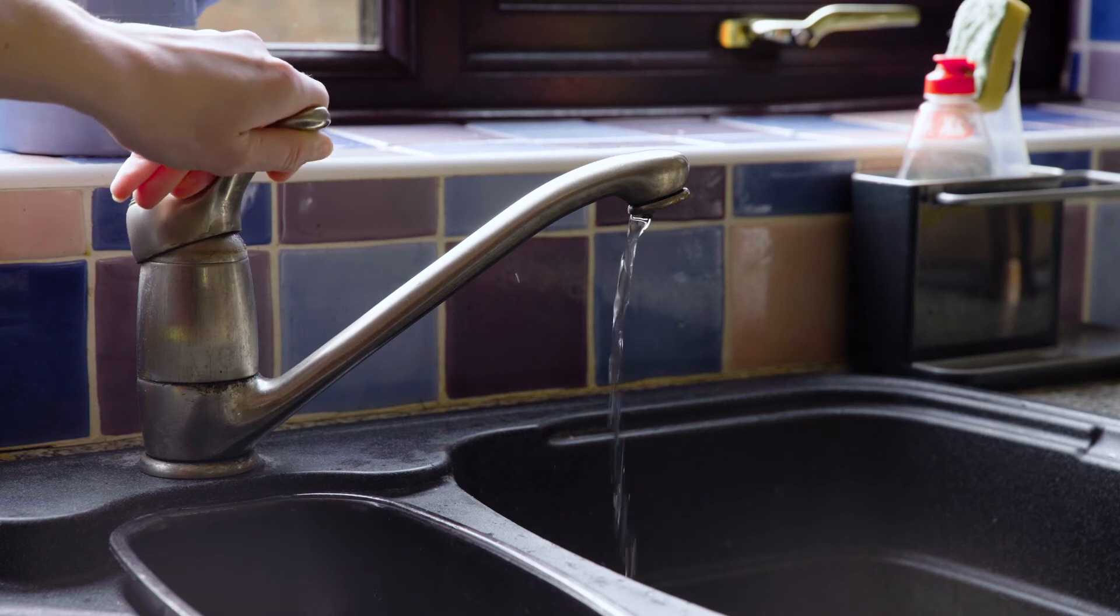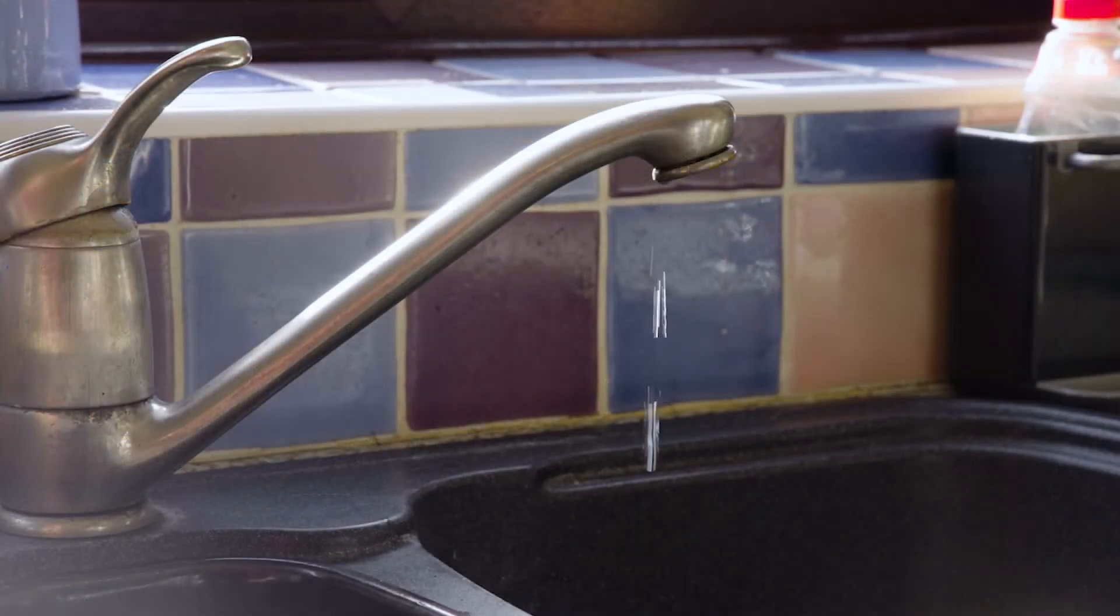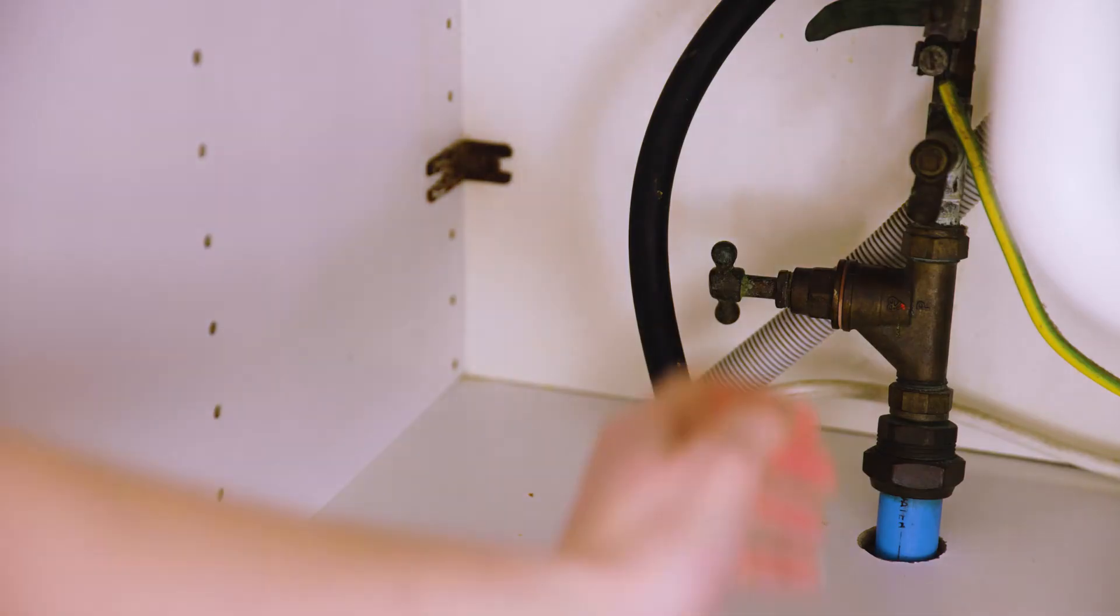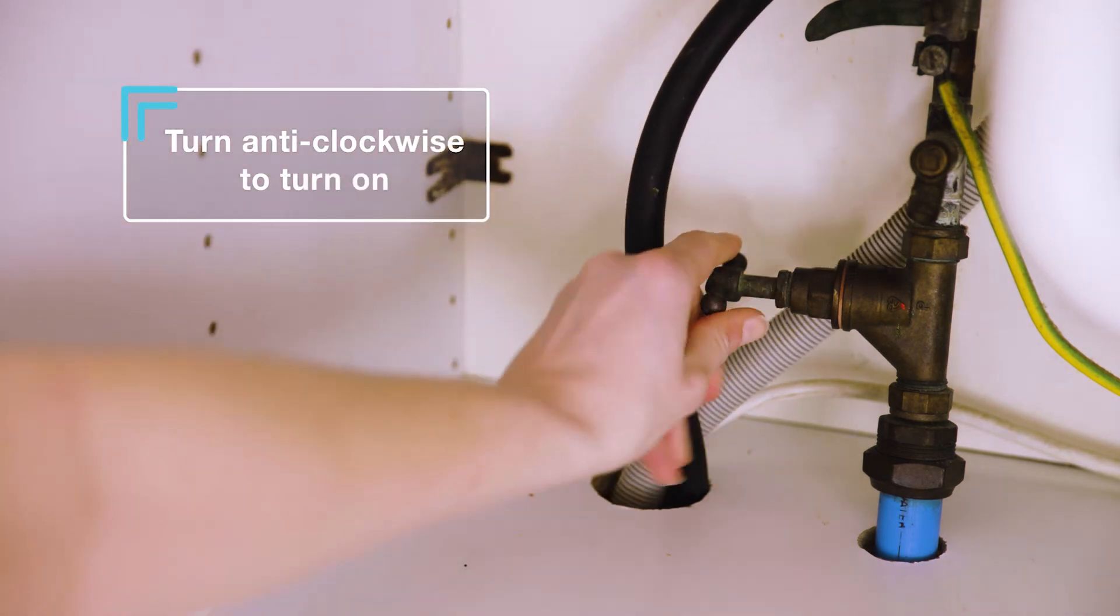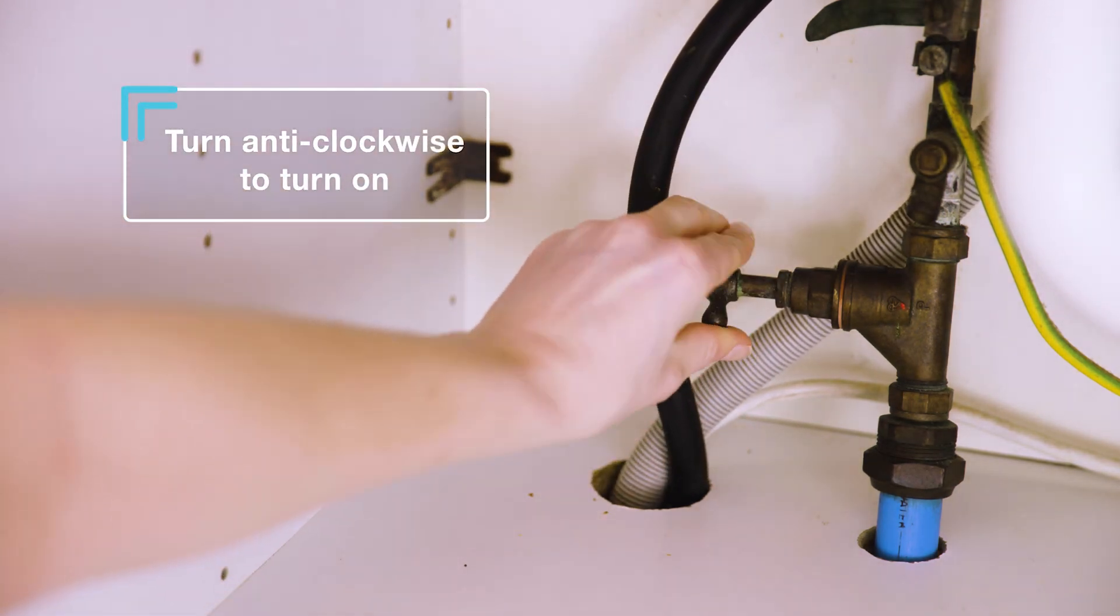You can check this has worked by running a tap. Once you're ready to restart your water supply, you can turn your stopcock valve anti-clockwise.